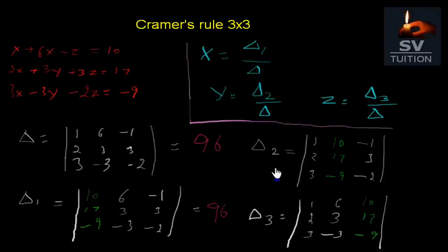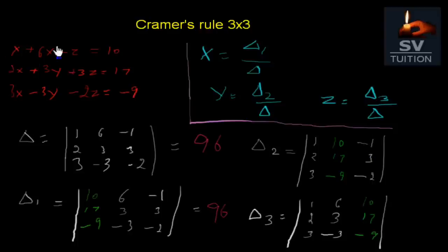Now we will change the second column with the values 10, 17, minus 9. The first column and third column will keep their original values. And we will calculate the determinant value of delta 2.